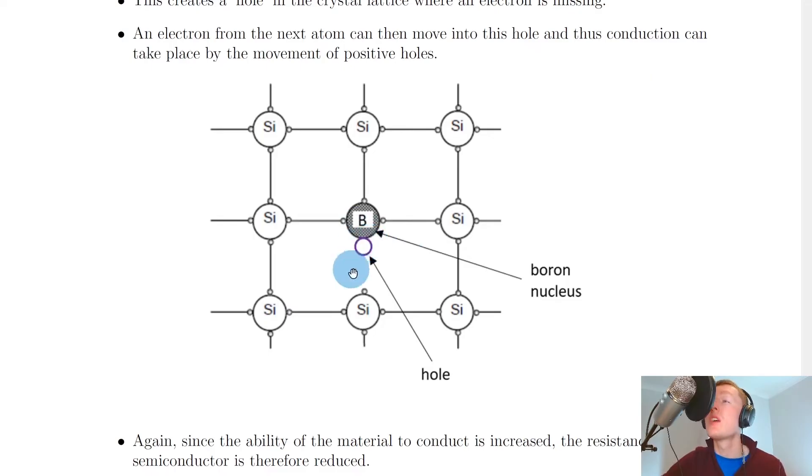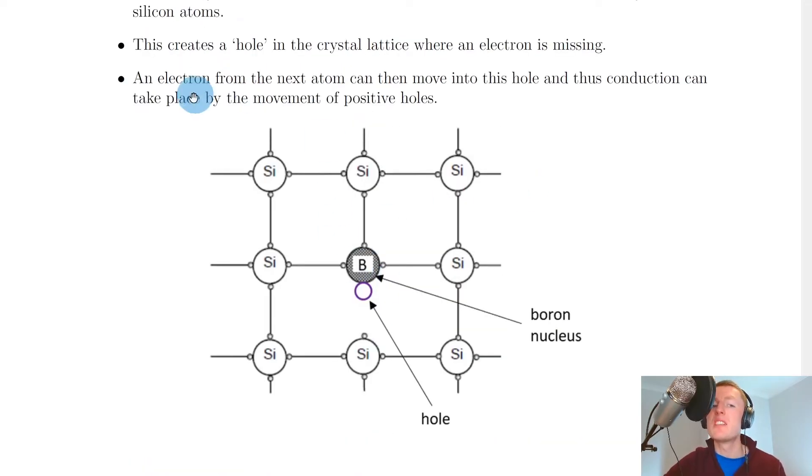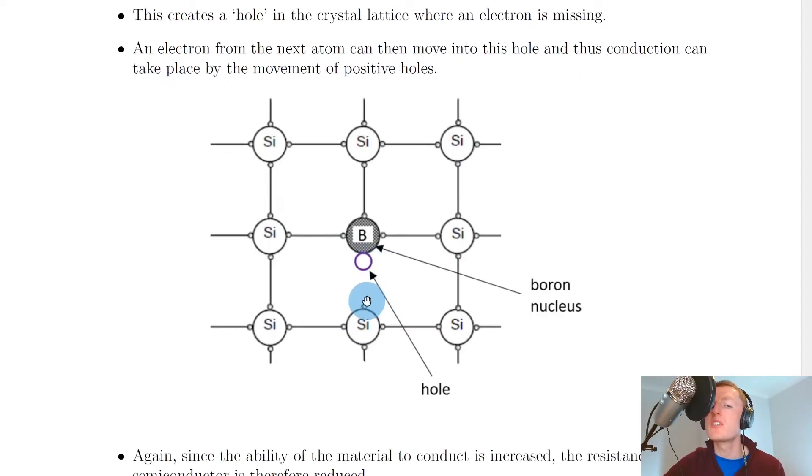I've drawn the hole as a larger purple circle. What this means is that an electron from the next atom can then move into this hole, and thus conduction can take place by the movement of positive holes. If this electron here moves into this hole to fill the hole, that means we would then have a hole at this position. If there's a hole at that position, then an electron over here might go and jump into that hole. It's almost like through the movement of electrons to fill the holes in our crystal lattice structure, we can think about it as being the holes that are actually moving themselves.